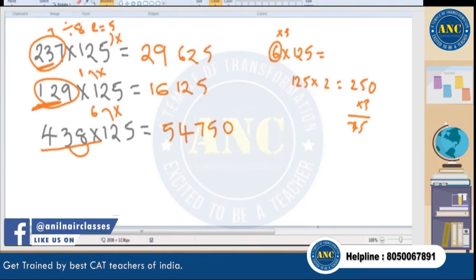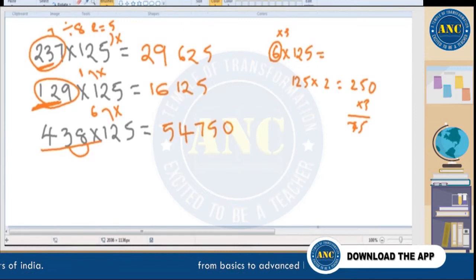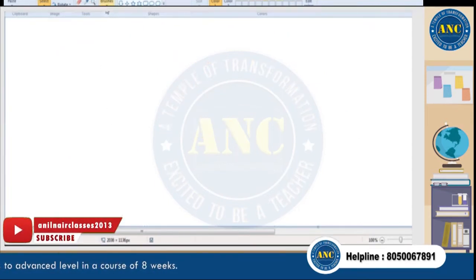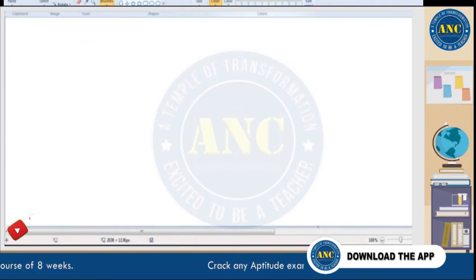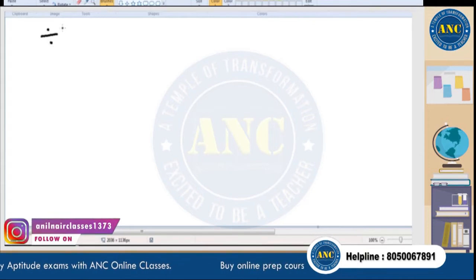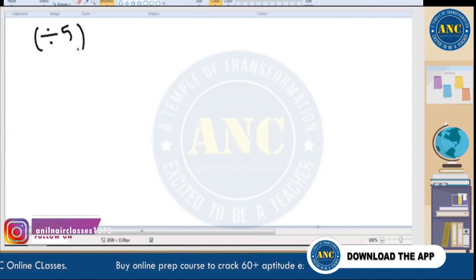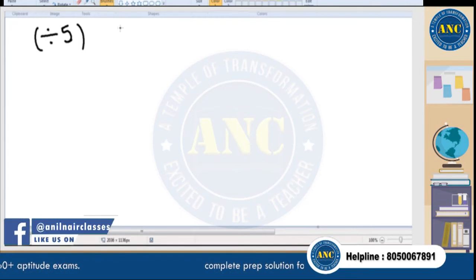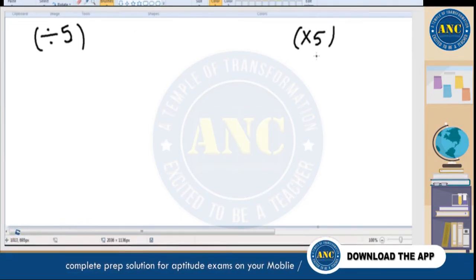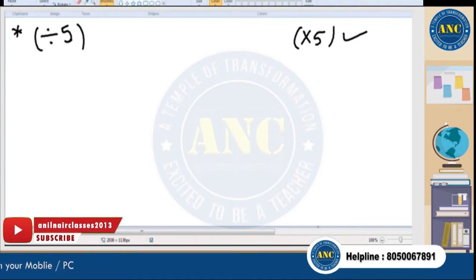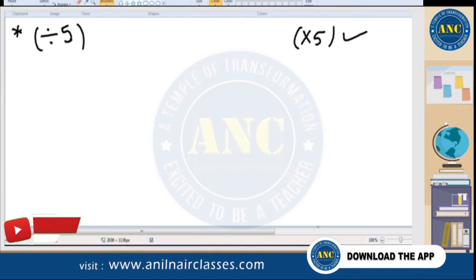This method is clear to everyone. Now I'm extending this to division as well. Any number divided by 5 — before entering this, check the multiplication-by-5 rule. If you know multiplication with 5, you can easily understand division by 5.